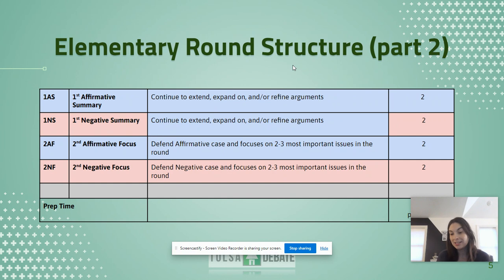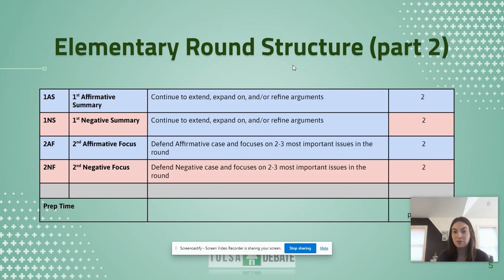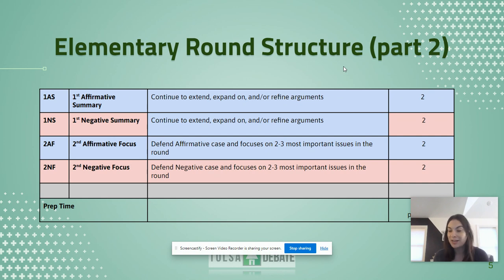Then we'll get to summaries, which is a lot like what kids learn about in elementary school — just summarizing everything they've said before. They'll continue to extend, expand on, and refine those arguments. They have two minutes to do that. The negative will have their turn at the summary, and then the focus, which is a honed-in version of that summary where they're defending their case and focusing on two to three of the most important points. Each team has two minutes of prep time — encourage them to take that. Prep time is gold.